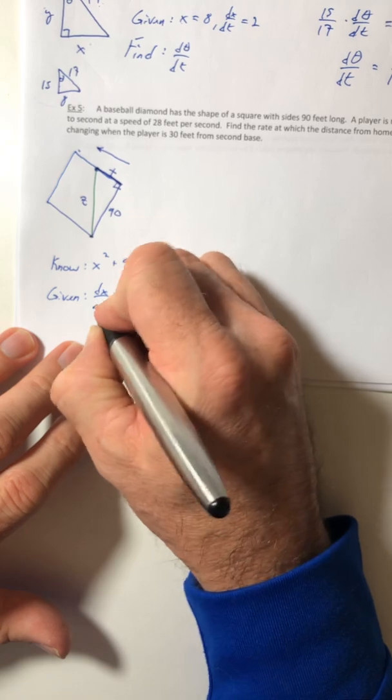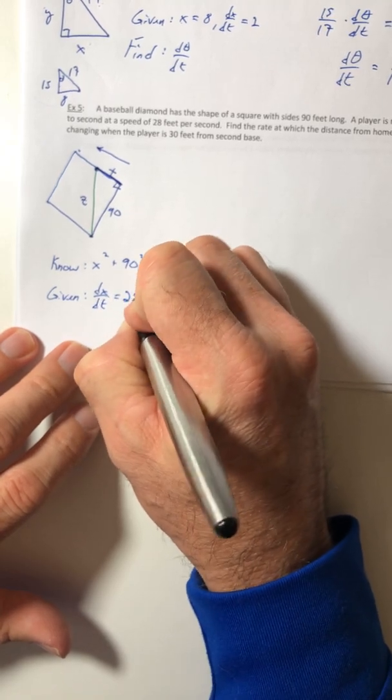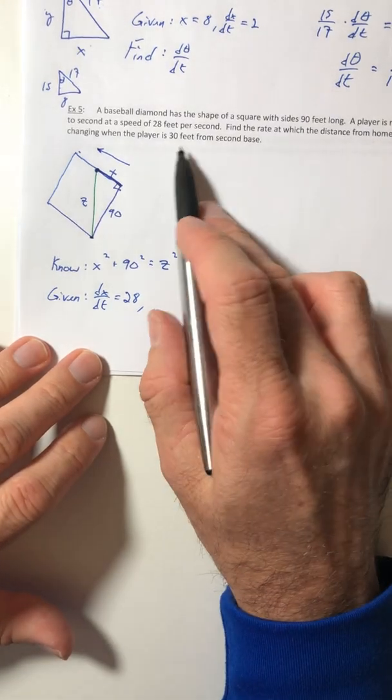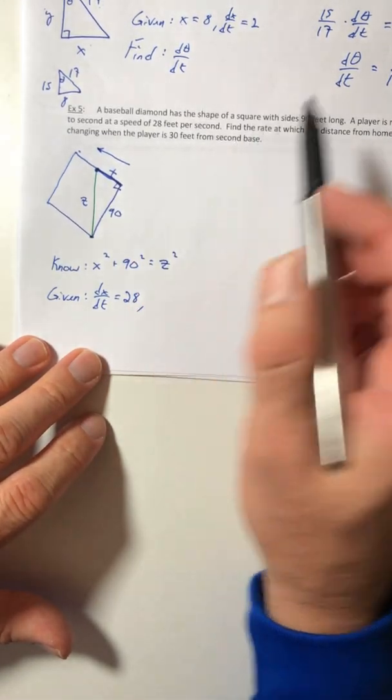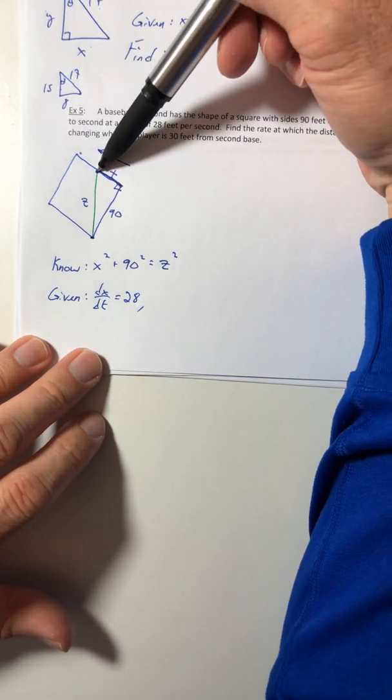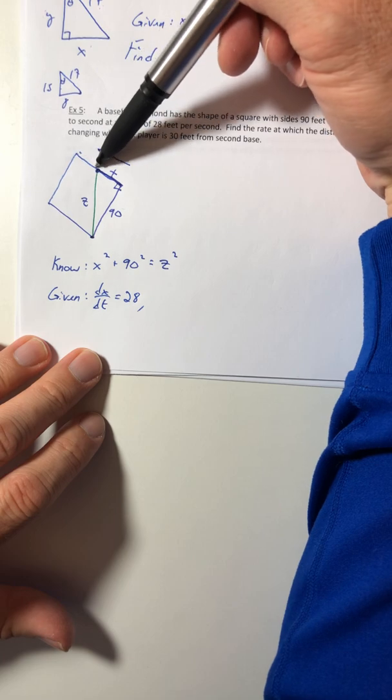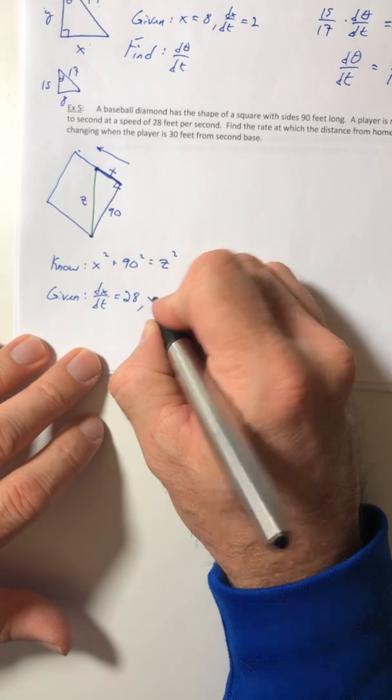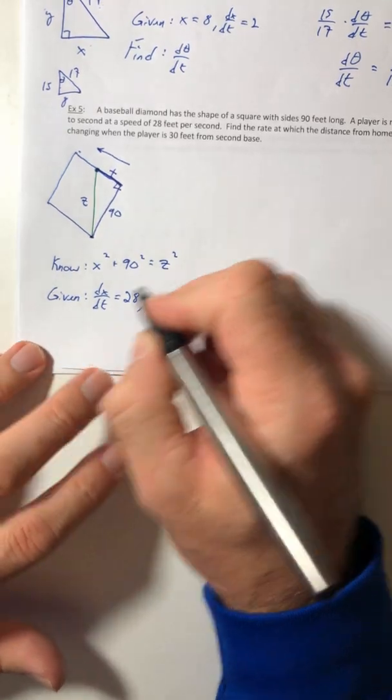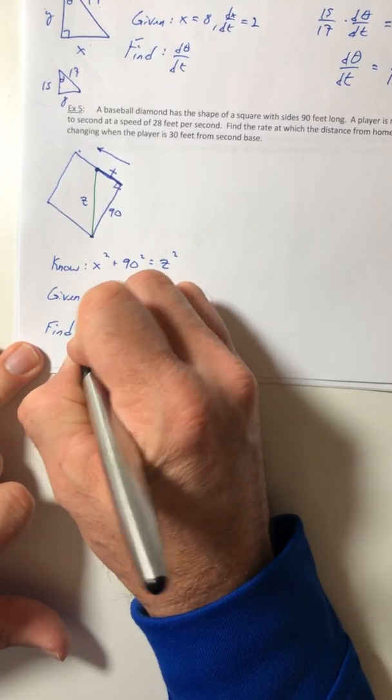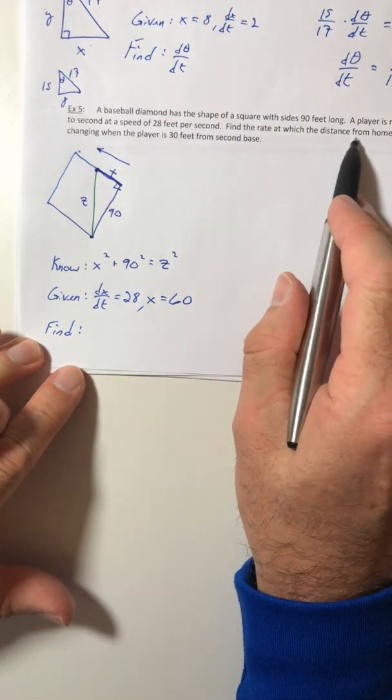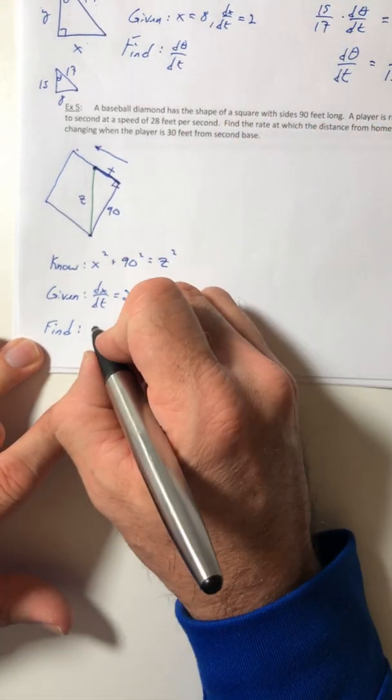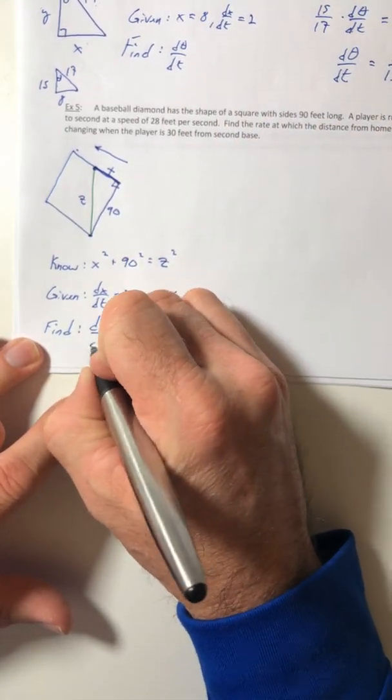Find the rate at which the distance from home plate is changing when the player is 30 feet from second base. So from here to here is 30. Well, if this distance is 30, then that value there, that X, would have to be 60. And what do they want you to find? The rate at which the distance from home plate is changing. So that would be the green line, or DZ DT.